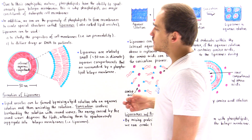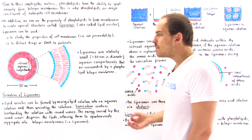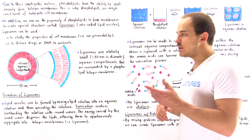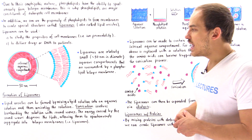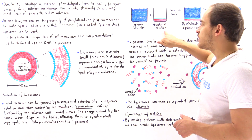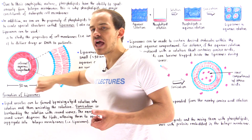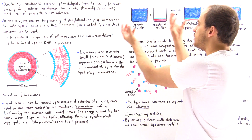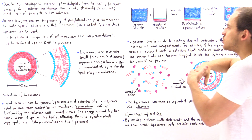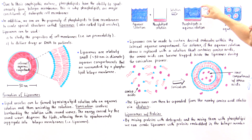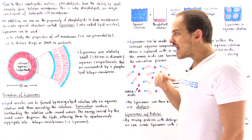To build a liposome that is about 50 nanometers in diameter, we follow a specific method, though larger liposomes can also be built using other techniques. We start with an aqueous solution and a second solution containing the phospholipid we want to use to create the bilayer membrane. When we mix these two solutions, the phospholipids don't mix well in the aqueous solution, so they form two separate layers.